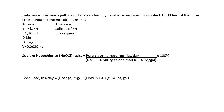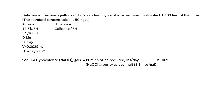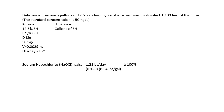Now we can solve for pounds: dosage times volume times 8.34, so 50 mg/L times 0.0029 million gallons times 8.34 pounds per gallon equals 1.21 pounds per day. We put pounds in the known column and plug into the hypochlorite gallons formula: 1.21 pounds divided by (0.125 times 8.34). Solving the denominator: 0.125 times 8.34 equals 1.04. Then 1.21 divided by 1.04 times 100%.